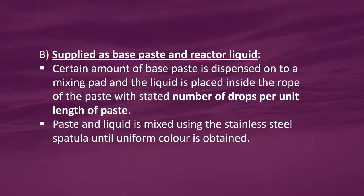For base paste and reactor liquid: a certain amount of base paste is dispensed onto a mixing pad and the liquid is placed inside the rope of the paste with a stated number of drops per unit length. The paste and liquid are mixed using a stainless steel spatula until a uniform color is obtained.